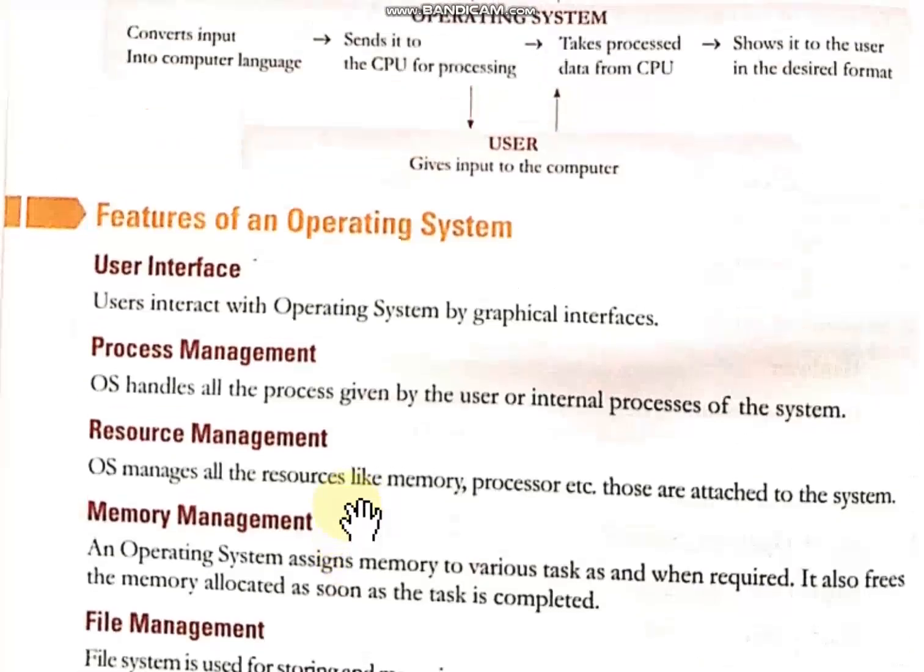First, user interface. When you interact with the operating system through a graphical interface, that is called the user interface. Have you ever noticed when you open your desktop, you see icons with graphics — that is, images. For example, 'My Computer' with a computer picture, or 'Recycle Bin' with a trash picture, so that you can understand the icons and operate the computer easily. That is how the operating system gives you a user interface.